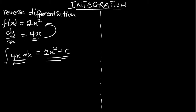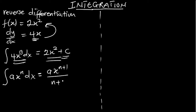Let's look at the general form for integrating. For an expression of the form ax^n integrated with respect to x, the formula gives us: ax^(n+1) over (n+1) plus a constant C. So we increase the power by 1, then divide by the new power, which is n+1, and we get the expression back plus a constant.